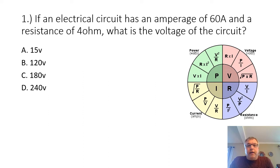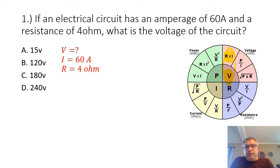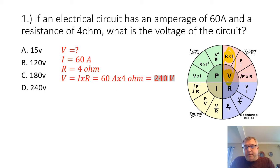Problem number one: if an electrical circuit has an amperage of 60 amps and a resistance of 4 ohms, what is the voltage of the circuit? We're looking for the voltage, and the values we are given are 60 amps and 4 ohms — the current and the resistance. Our formula is V equals IR, which is Ohm's law. 60 amps times 4 ohms gives us a voltage of 240 volts. The answer is D.